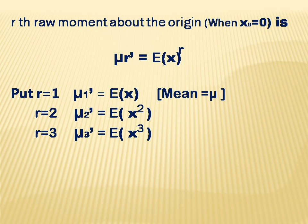When r equals 3, mu 3 dash is equal to E of X raised to 3. When r equals 4, mu 4 dash is equal to E of X raised to 4.